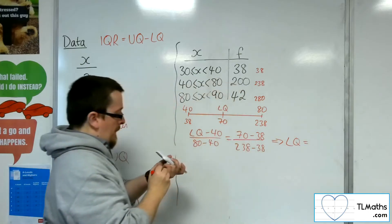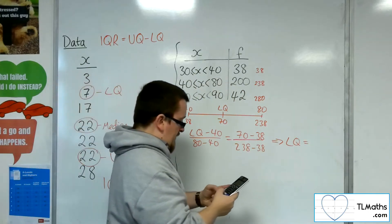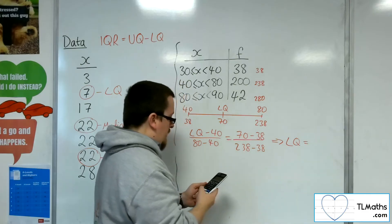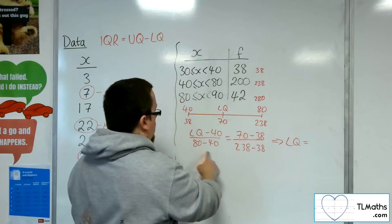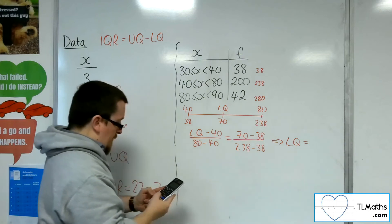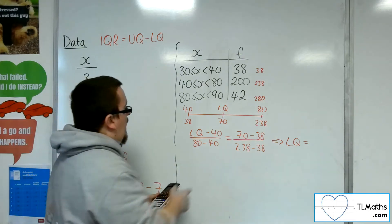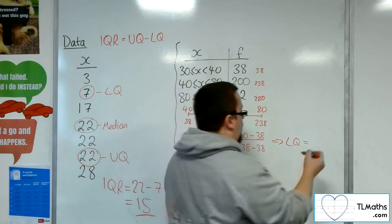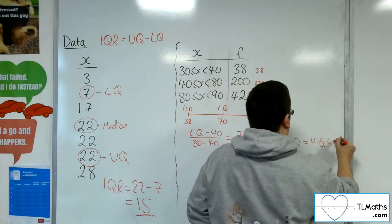So 70 take away 38 over 238 take away 38 gets us 4 over 25, multiply up by the 80 take away 40, and then add 40 to both sides, and we get 46.4 as the lower quartile.